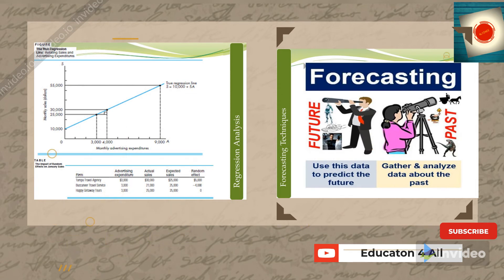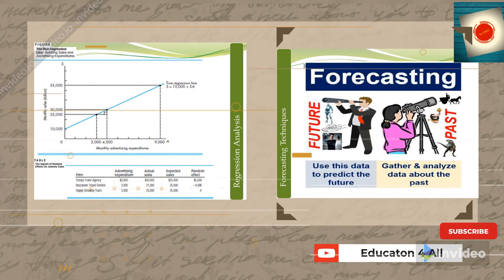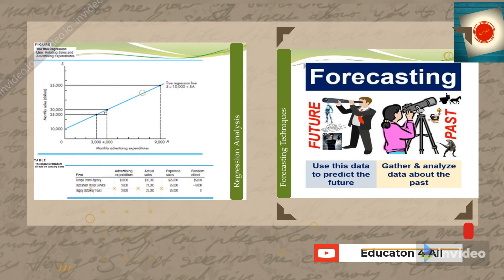You might have seen advertisement tags on cricketers' uniforms, European footballers, tennis players, bikers, motor car racers, and various sports. These advertisement tags on uniforms and kits demonstrate that advertisement plays a major role in the sales of any brand.